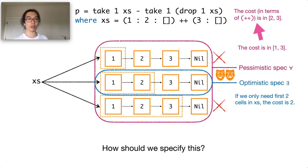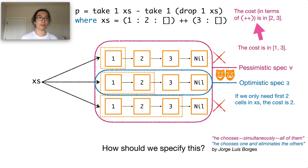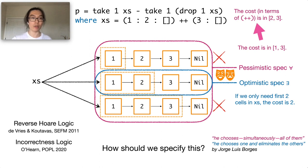In particular, we call the first kind of specifications the pessimistic ones, and the second kind of specifications the optimistic ones. This style of reasoning based on dual specifications is also very similar to the reverse Hoare logic and incorrectness logic.